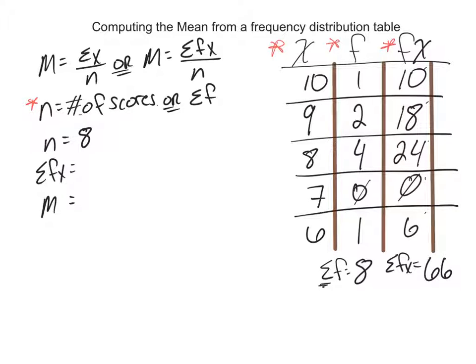So we have sum of f of x as 66. Our mean is sum of f of x divided by n, so sum of f of x would be 66 divided by 8, and so our mean for this frequency distribution table is 8.25.